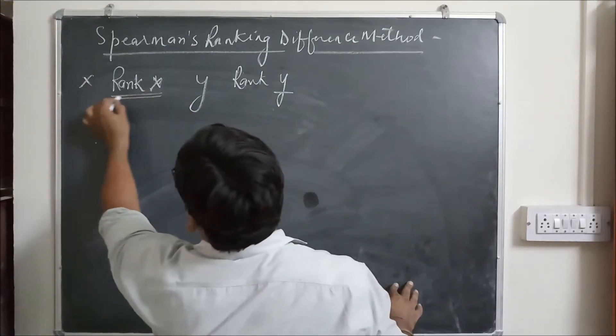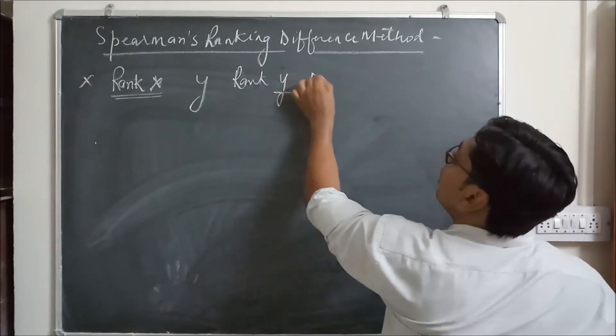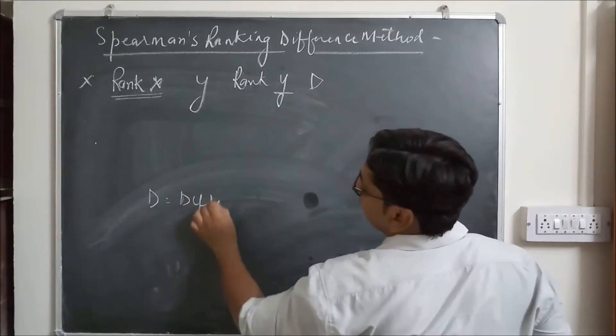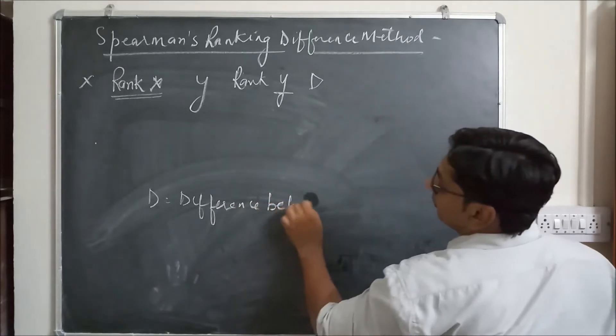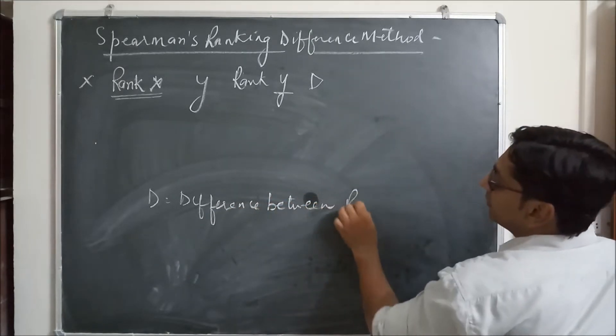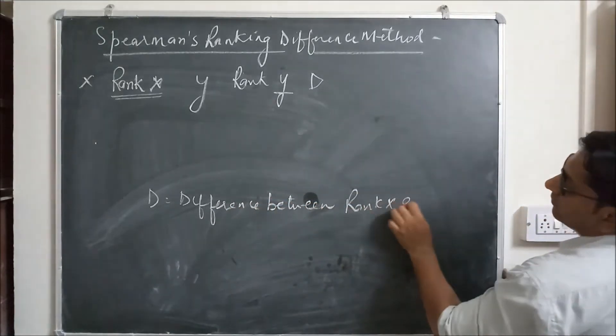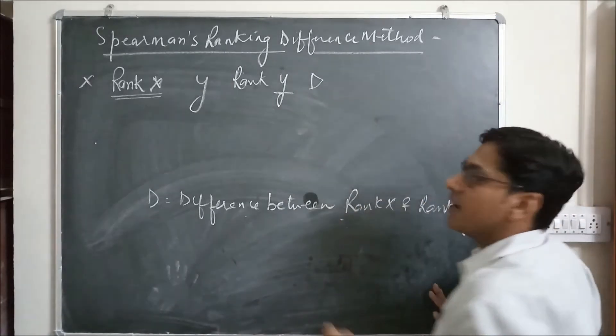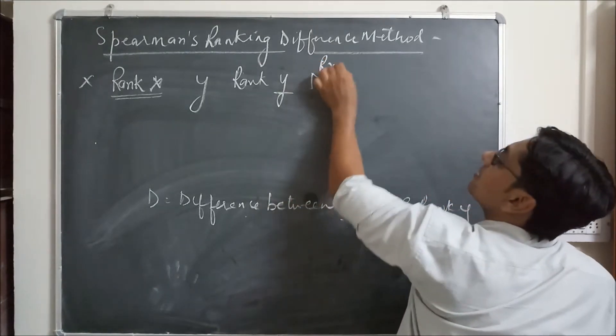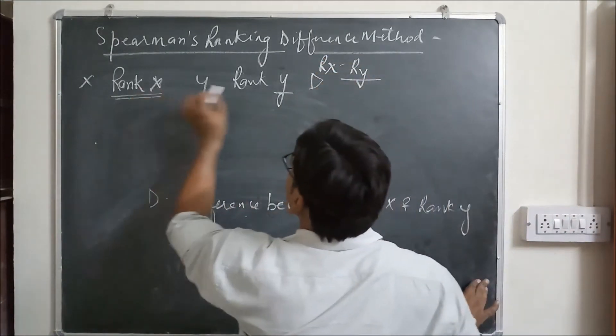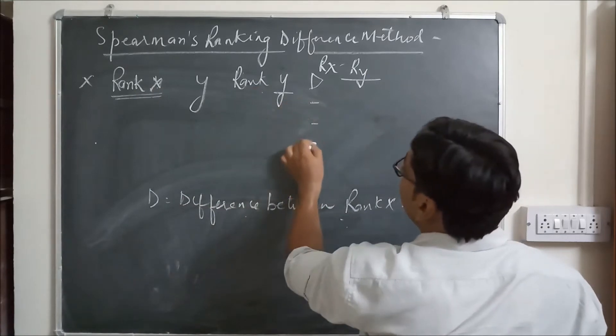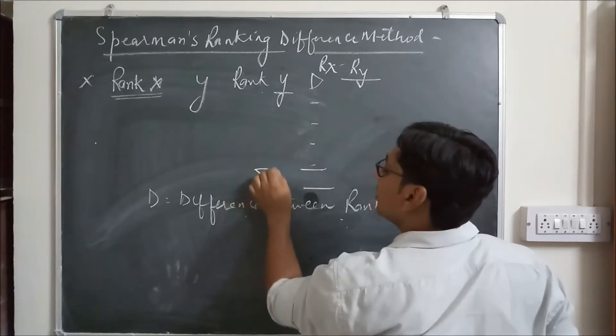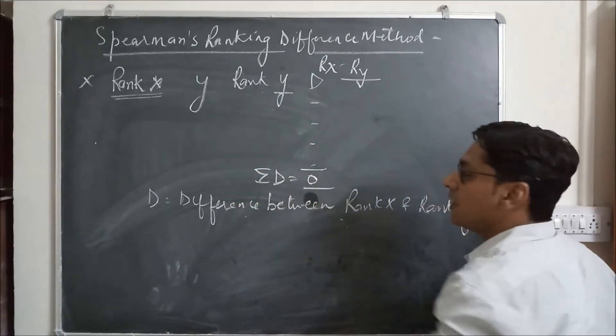After giving the ranks, rank X and rank Y, we calculate D. D means the difference between rank X and rank Y. So rank X minus rank Y, and here we got D.